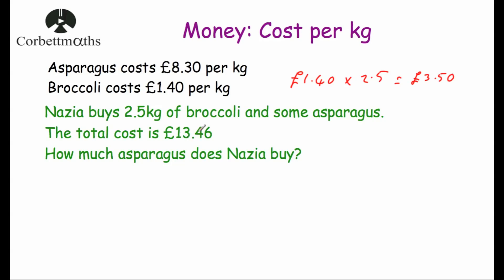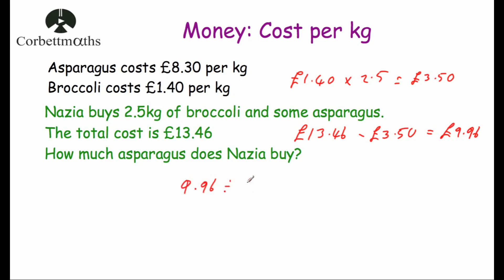Out of the £13.46 total, £3.50 was for broccoli, so the rest was for asparagus. £13.46 minus £3.50 equals £9.96. Nazia spent £9.96 on asparagus. Since asparagus costs £8.30 per kilogram, we divide: £9.96 divided by £8.30 equals 1.2. So Nazia buys 1.2 kilograms of asparagus.